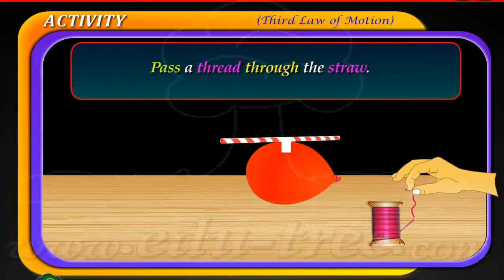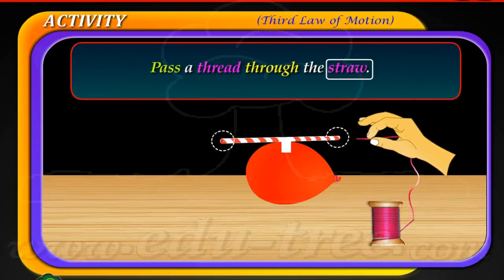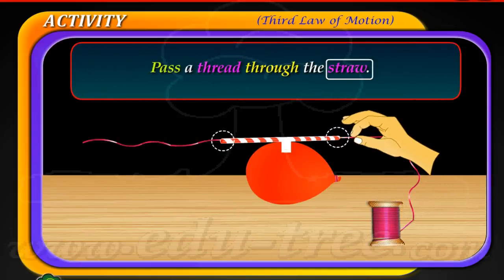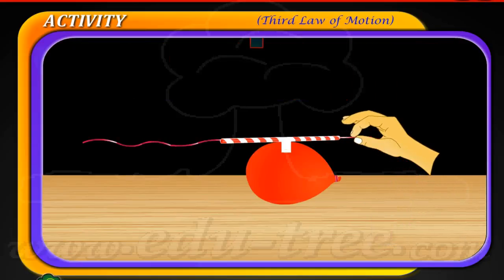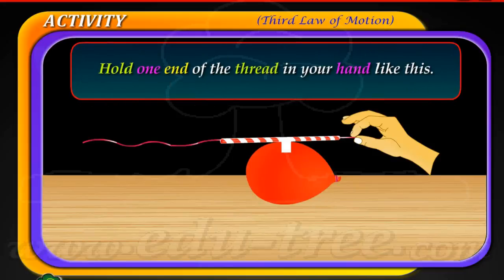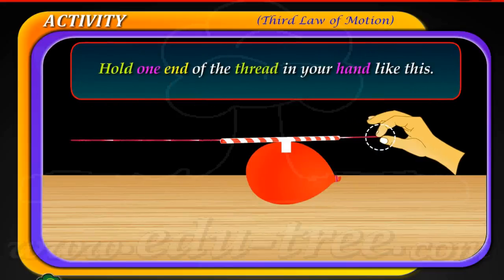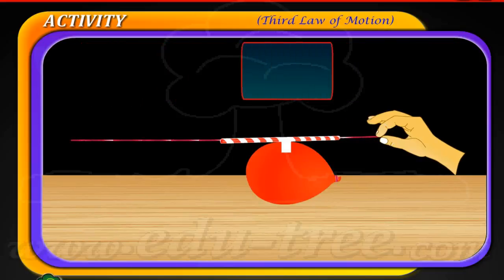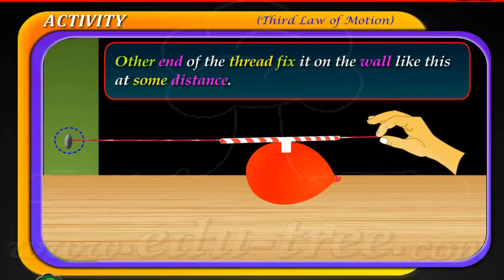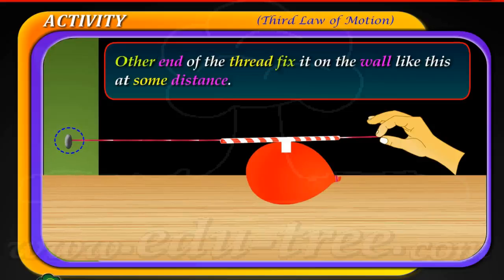Pass a thread through the straw and hold one end of the thread in your hand like this. Fix the other end of the thread on the wall at some distance.